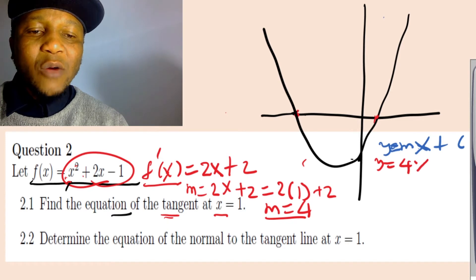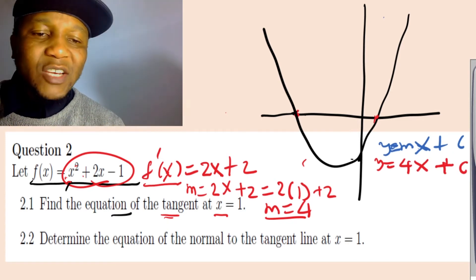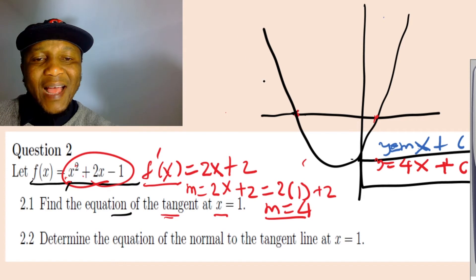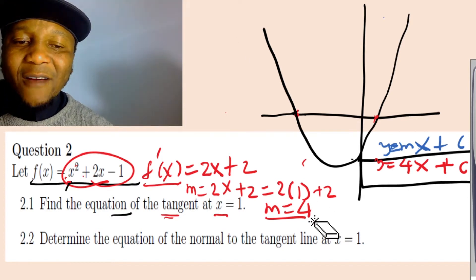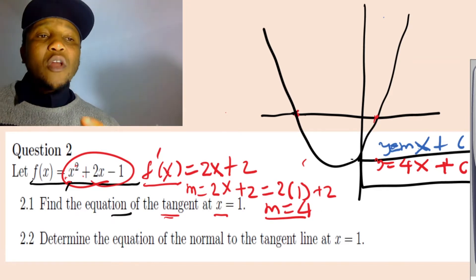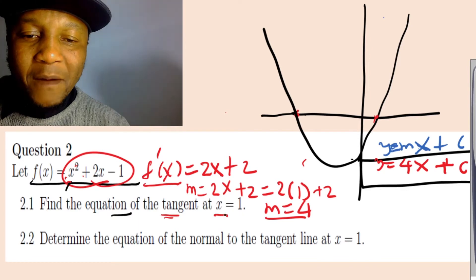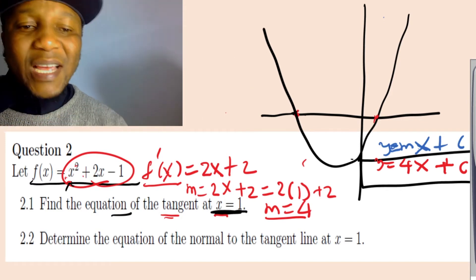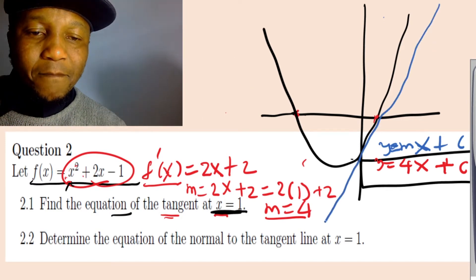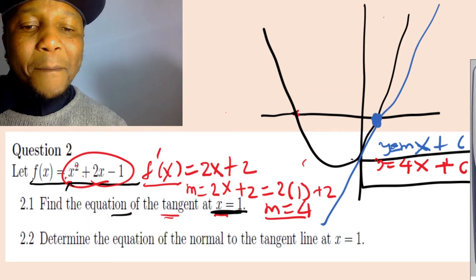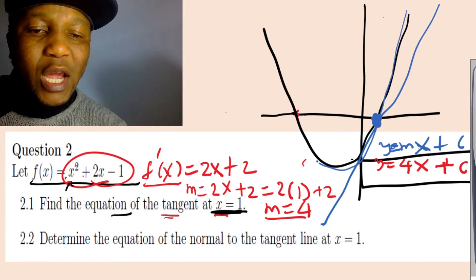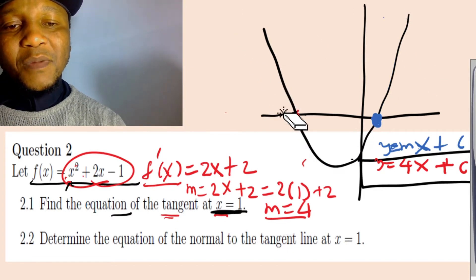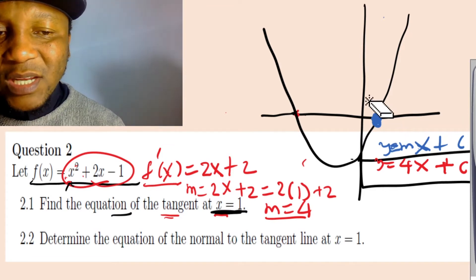So our equation becomes y equals 4x plus c. We know m equals 4, but we still need to find c, which is the y-intercept of the tangent line. Write all of this working because every step earns marks. The tangent point is at x equals 1, so let's substitute that to find the coordinate.